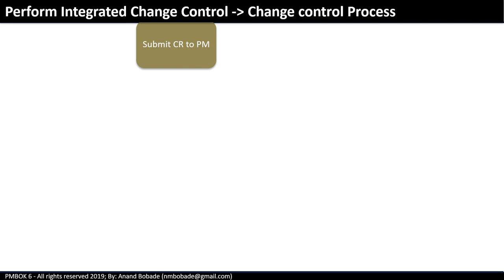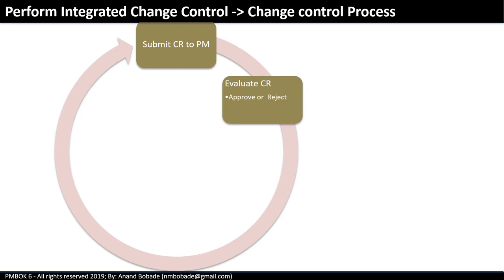Let's see how the change control process works. Note that this is a very generic process — your organization may have a specific process as per your project management methodology. This process is shown here only for illustration purposes. Any stakeholder can submit a change request, either into a change control software tool or as an email to the project manager. The project manager will evaluate the change request — initial evaluation ensures correctness and that all required information is entered. If something is missing, it might get rejected for further work.